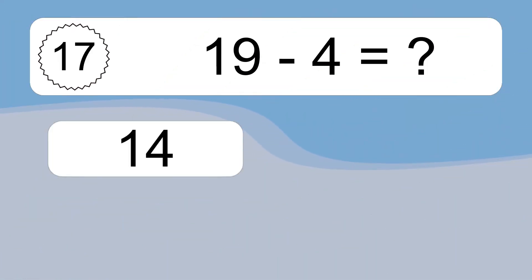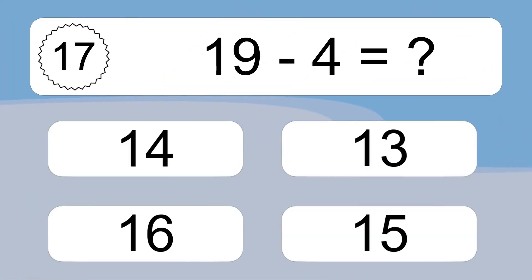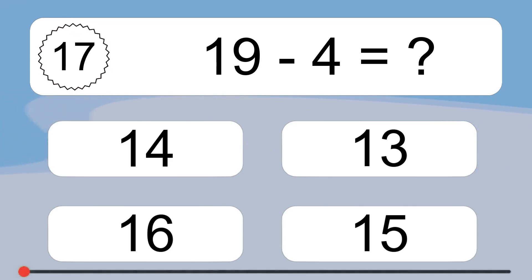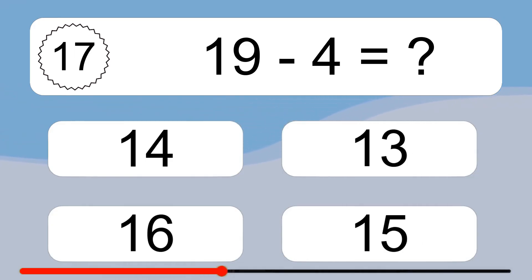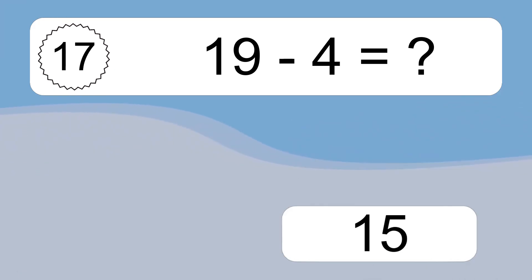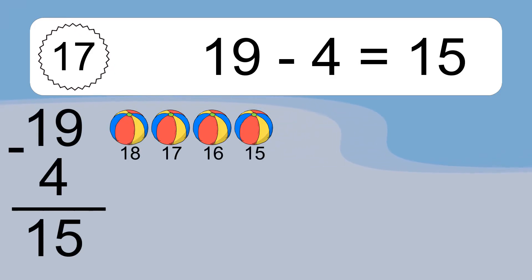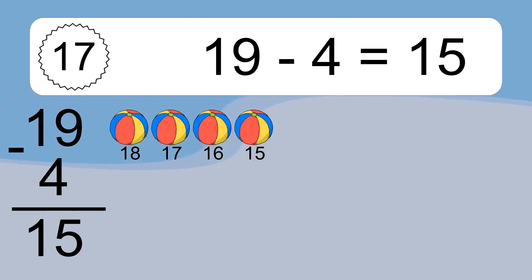19 minus 4 equals what? 19 minus 4 equals 15. Let's count it. 18, 17, 16, 15.